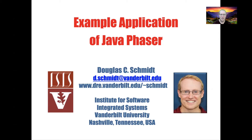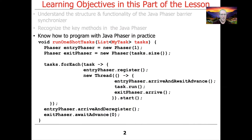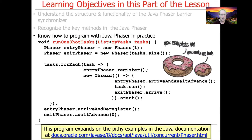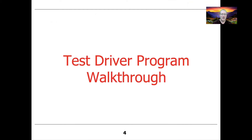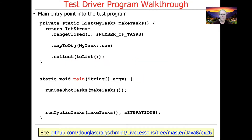Now that we've had a chance to talk about the structure and functionality of Java Phaser, as well as explore some of its key methods, we'll take a look at an example application that demonstrates how to apply Java Phaser in practice. This particular video is interesting because it will take some of the pithy examples you'll find in the Javadoc documentation for Java Phaser and complete them to make them something you can actually run and experiment with on your own. This example also showcases phasers used as both entry and exit barriers, as well as in their use as both one-shot and cyclic barriers.